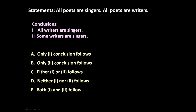The given problem has two statements: all poets are singers, and all poets are writers. Based on these two statements we have to determine which conclusion follows — either all writers are singers, or some writers are singers. First, let us convert these two statements into the Venn diagram.